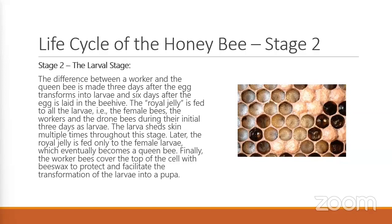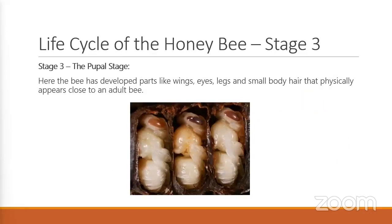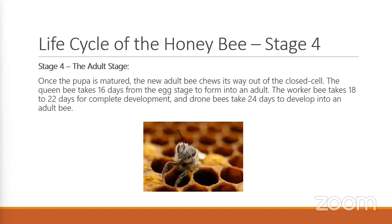Finally, the worker bees will cover the top of the cell with beeswax to protect it from debris, helping them transform into a pupa. In the pupal stage, this is where they start to look like bees — they get their wings, their eyes, their body hair, their legs. People call this the purple eye stage, for obvious reasons — their eyes are purple. They're starting to look more like an adult bee. Stage four: they chew their way out of their cell and begin their adult life. It takes 16 days for a queen from egg to adult, 18 to 22 days for a worker, and drones take the longest at 24 days.